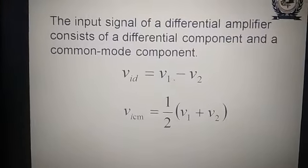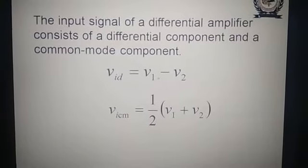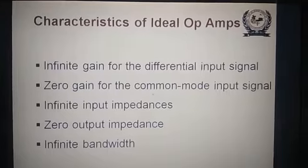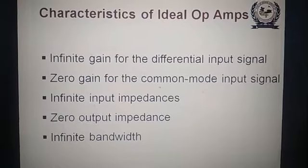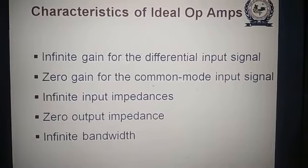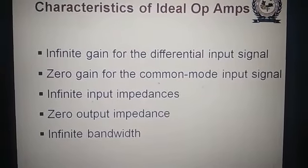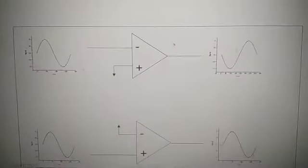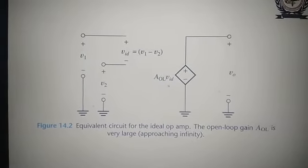For the ideal op-amp we have gone through this: the differential voltage is V1 minus V2, and the common mode voltage is the average value (V1 plus V2)/2. Characteristics of the ideal op-amp: infinite gain for differential input, zero gain for common mode input signal, infinite input impedance Ri, zero output impedance Zo, and infinite bandwidth. We have seen the equivalent circuit for the ideal op-amp.